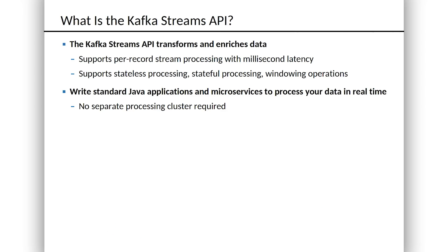This lets you develop in whatever system you want — Mac, Windows, Linux, the IDE of your choice. This is a Java API and there are no real other constraints on how you want to run. If you need to run just locally on a single-node Kafka cluster deployed on your development machine, easy, no problem. Exactly the same code that will run in production can run on that one local node.